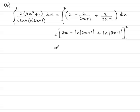So, all that's left to do now is just substitute 2 in for x, and then subtract what we have when we put the 1 through. So, putting the 2 through gives 2 by 2 is 4. Then we have minus natural log of 2 times 2, which is 4, plus 1 is 5, so that's the natural log of 5. We don't need the mod anymore, because this is a positive value.